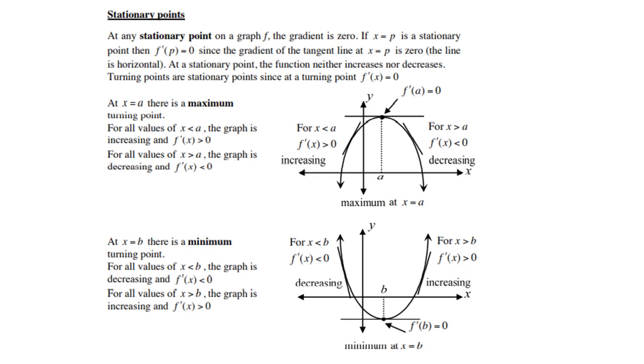Stationary points. At any stationary point on the graph of f, the gradient is zero. That's very important. If x = p is a stationary point, then the derivative at p is zero, since the gradient of the tangent line at x = p is zero, the line is horizontal.